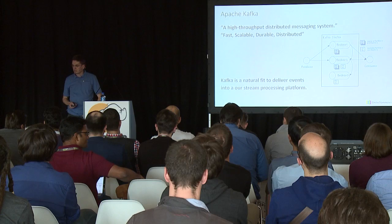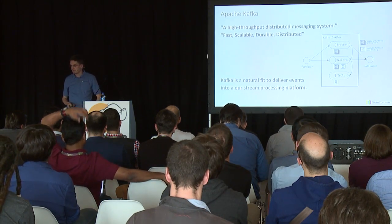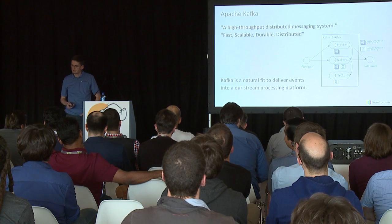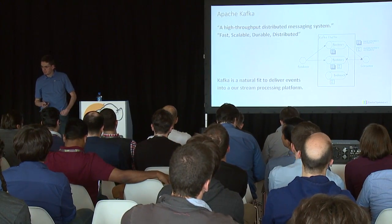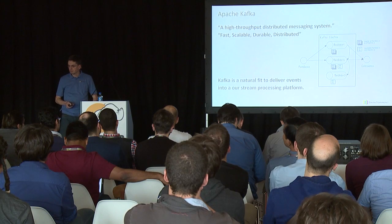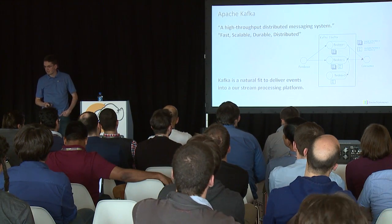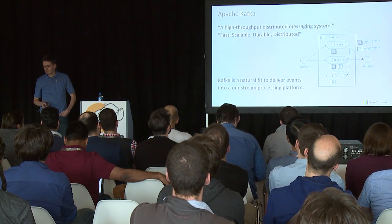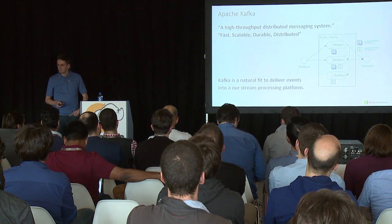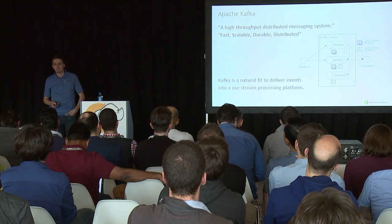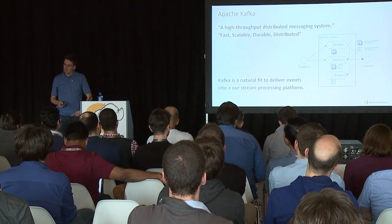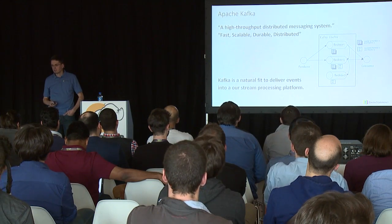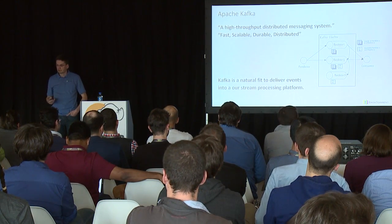Besides that, Kafka is also fault tolerant because it has replication of partitions. On broker one there is a partition P0 and a replica P0, and on broker two you see the same partition as a replica P1, inactive. So if broker one fails, broker two could take over and preserve the data. In that regard, Kafka has all the properties to be a scalable and fault tolerant system.